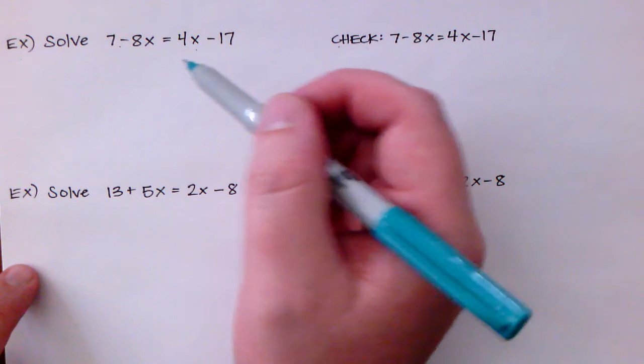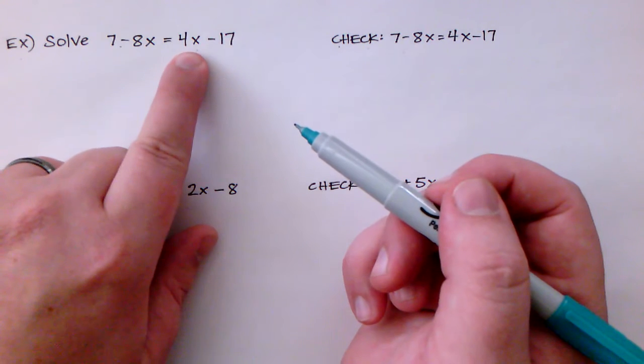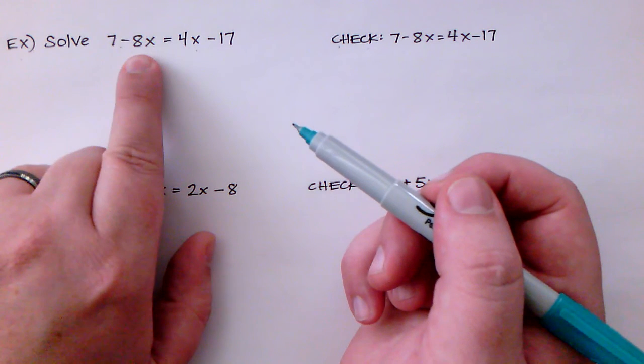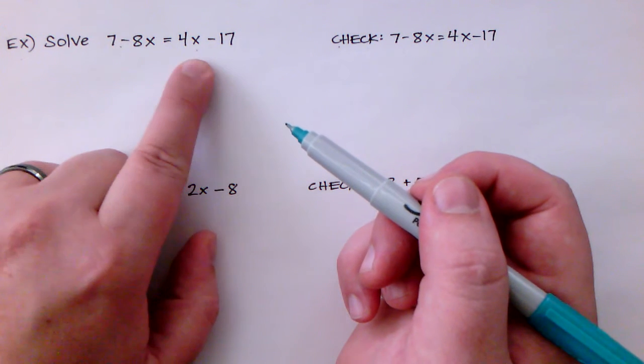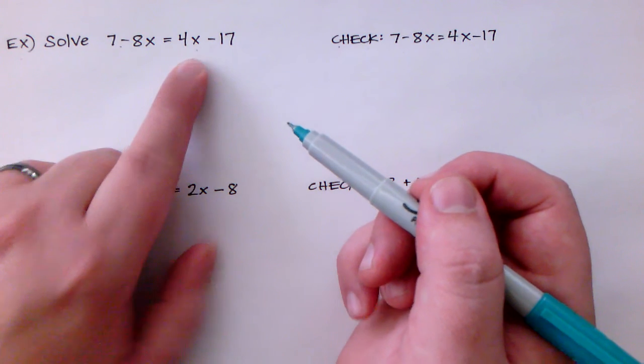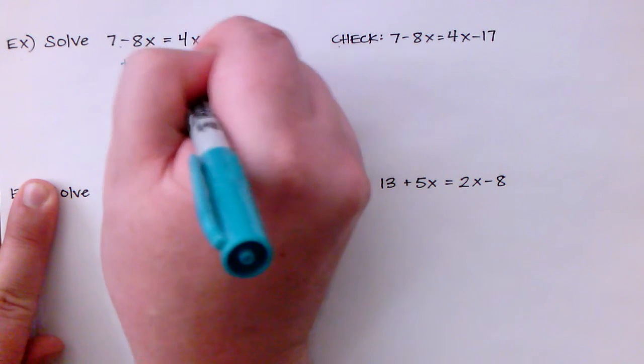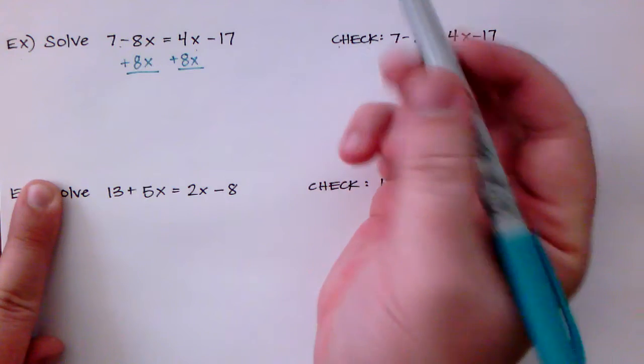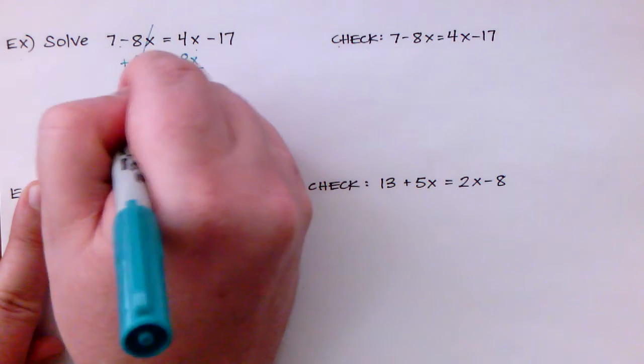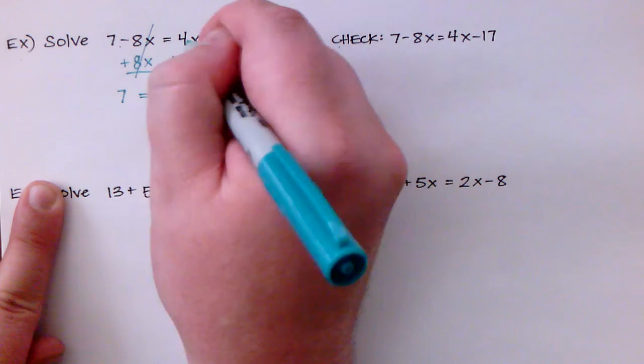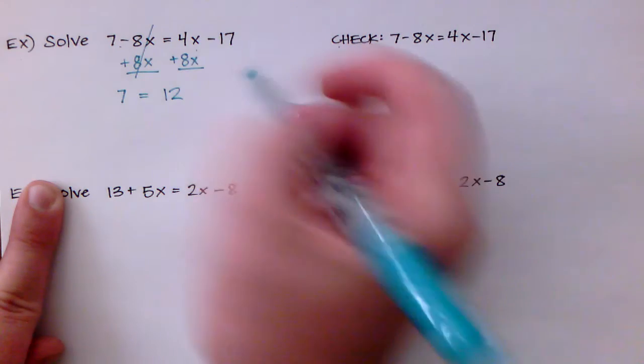So I could pick whichever side I want to move the variables to. For instance, if I moved the 4x to the other side I'd be subtracting 4x and dealing with negative numbers. But if I add 8x and move it to the right side, then I'd be working with positive numbers. So I think that's what I'm going to do. That's what you should do every time—just look ahead and see which is going to make the easiest work for you and go that way. So negative 8x plus positive 8x cancel each other out and I'm just going to write what I have. I have 7 is now equal to 4x plus 8x which is 12x and I still have the minus 17.